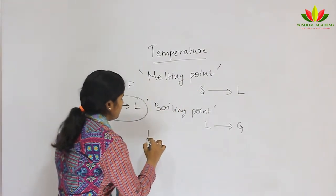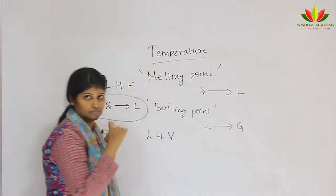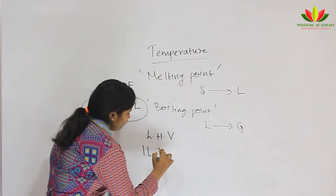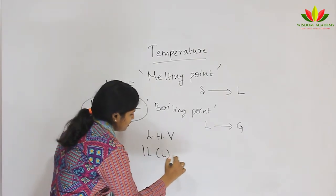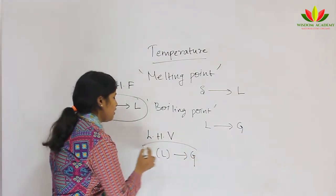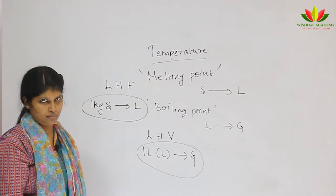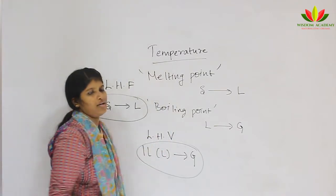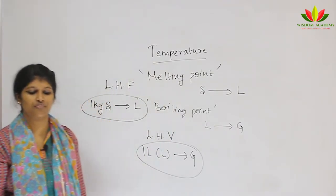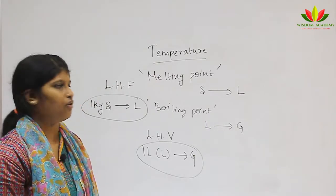Then there is latent heat of vaporization. Similarly, 1 litre of liquid is converted into gas — the heat energy required for this under atmospheric pressure at its boiling point is called latent heat of vaporization. These four terms you should know before getting into the topic.